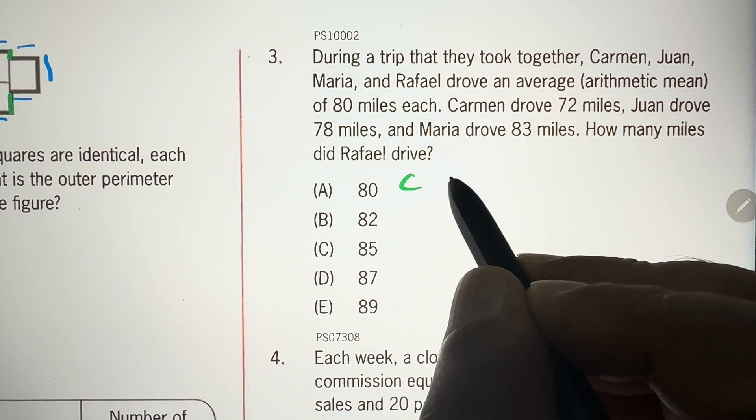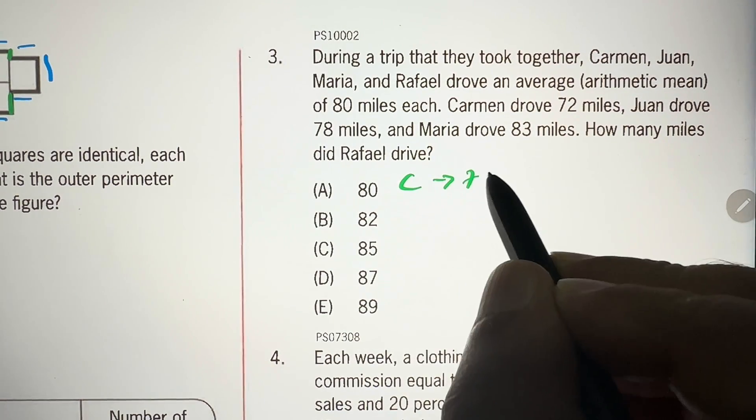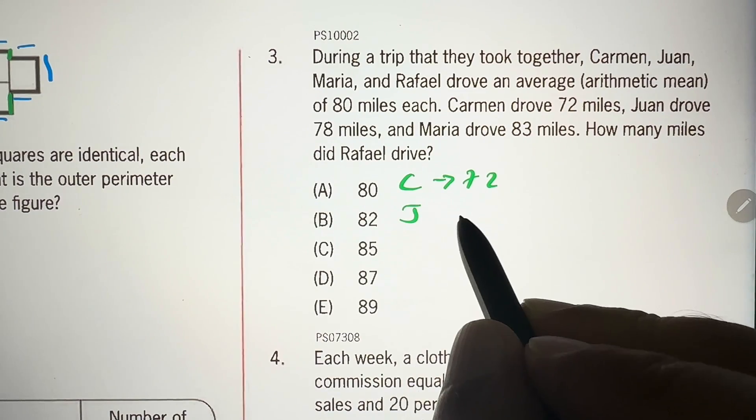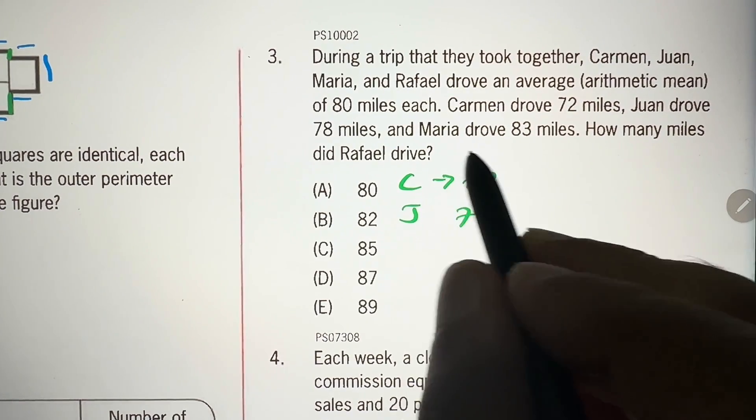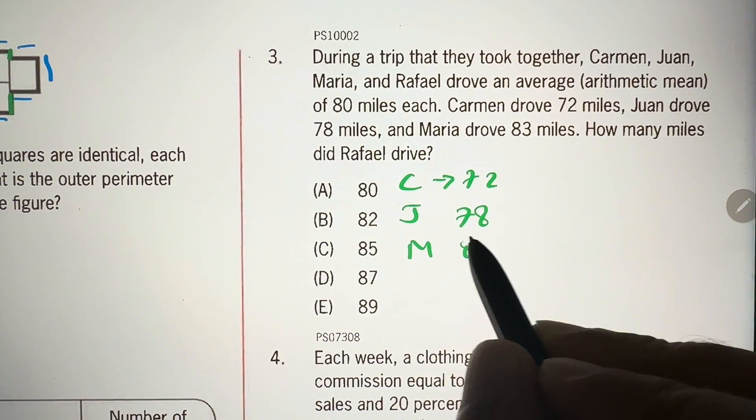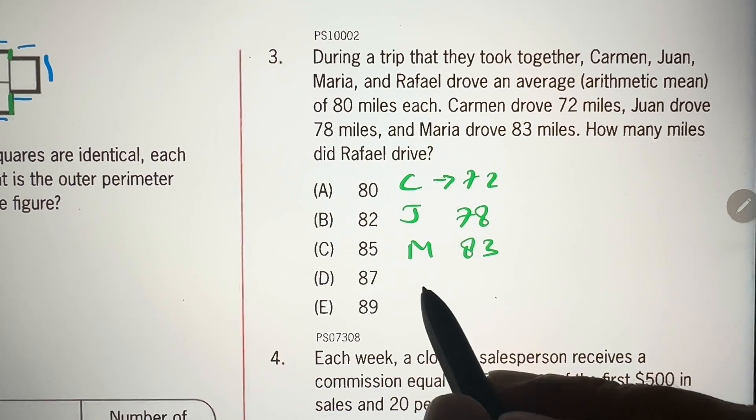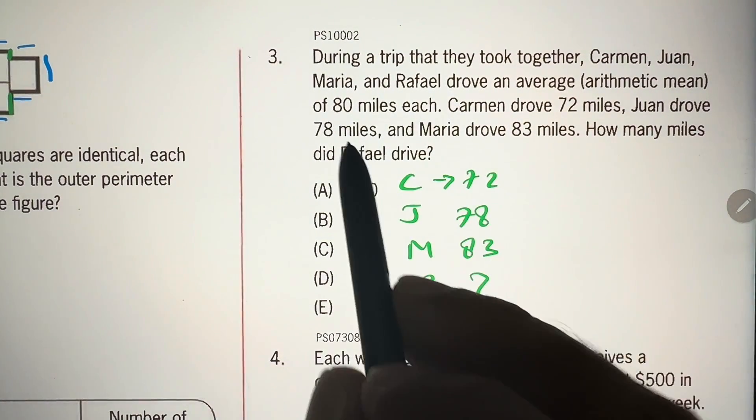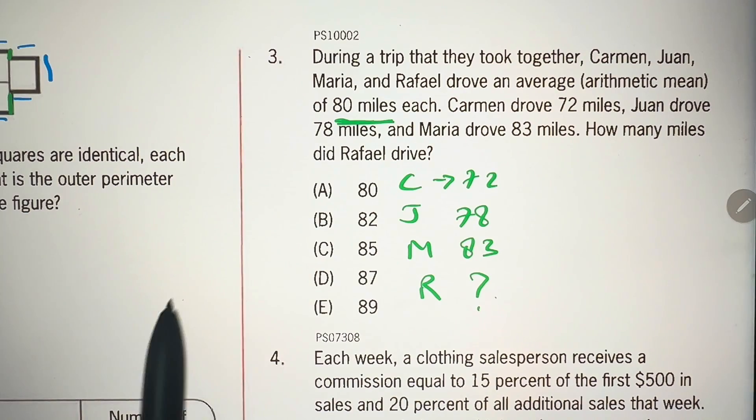So Carmen, 72, then Joan drove 78 miles, Maria, 83 miles, and Rafael, we don't know. We have to calculate, and the average is 80.